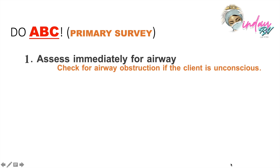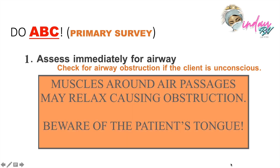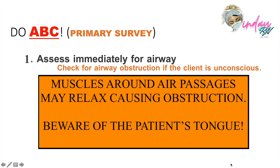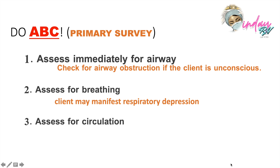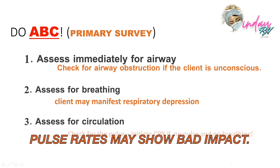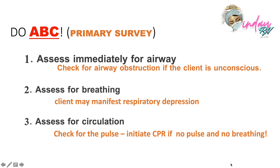It is vital to check for airway obstruction if the client is unconscious, because muscles around air passages may relax with prolonged exposure or massive poisoning, and the tongue may relax causing obstruction. Next, assess for the patient's breathing — the client may manifest respiratory depression, so assess respiratory rate. Then assess for circulation: since we are talking about blood, pulses may receive a bad impact with a possible cessation of pulse rate. Therefore, if you assess no pulse and no breathing, initiate CPR immediately.